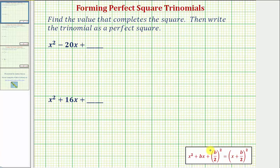Therefore the constant term c must be equal to b divided by two squared, where b is equal to the coefficient of the degree one term.